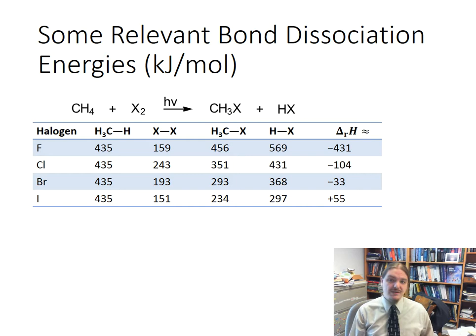So for fluorine, we get negative 431 kilojoules per mole, so very exothermic. Chlorine, negative 104 kilojoules per mole, still exothermic. Bromine, negative 33 kilojoules per mole, only slightly exothermic. And then iodine, plus 55 kilojoules per mole, so now we're endothermic.